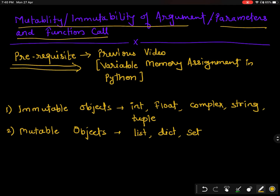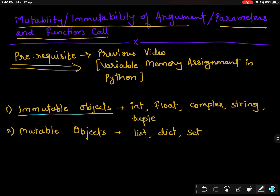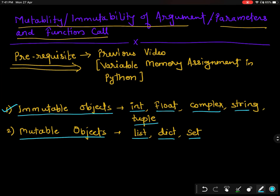As you know, immutable objects are integer, float, complex, string, and tuples. Immutable objects are those objects which change their address when we change their values. Mutable objects are list, dictionary, and set. If we change the value of a mutable object, it does not change its memory location.